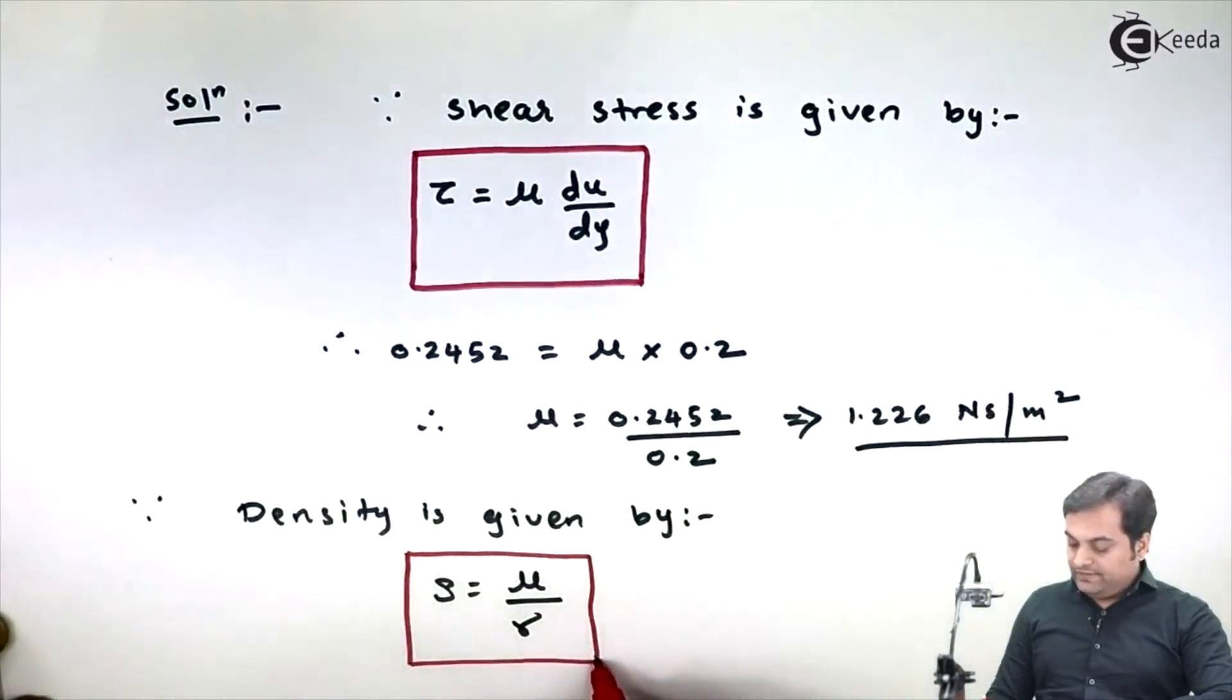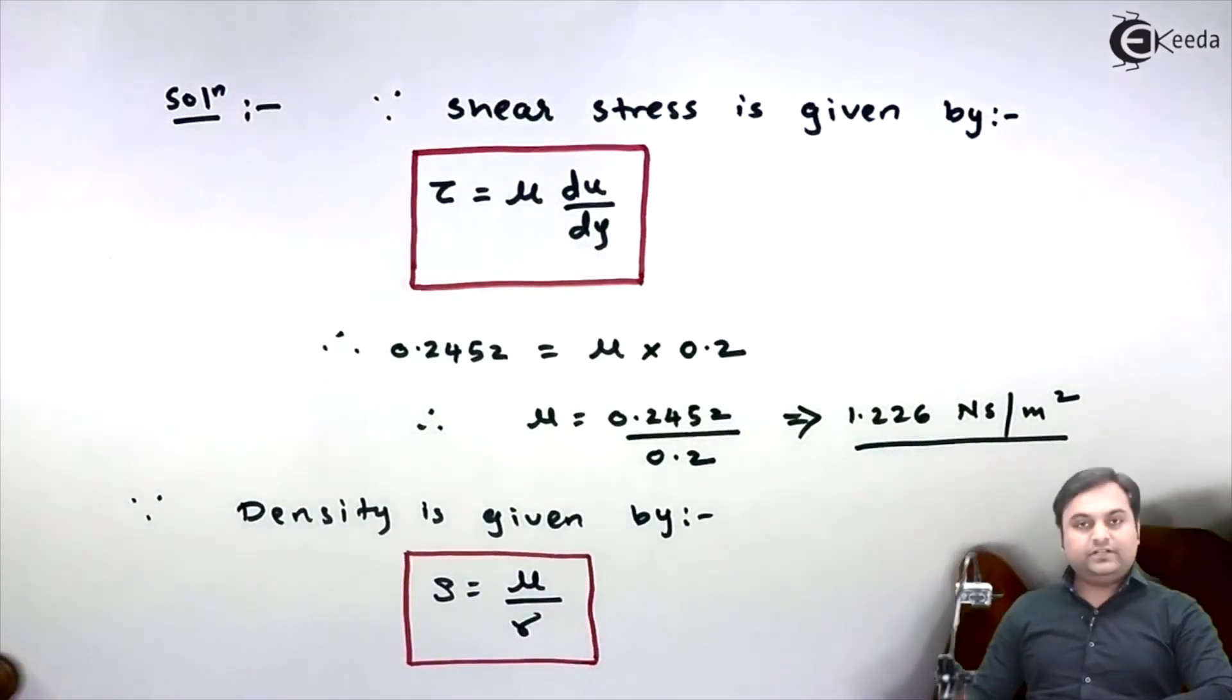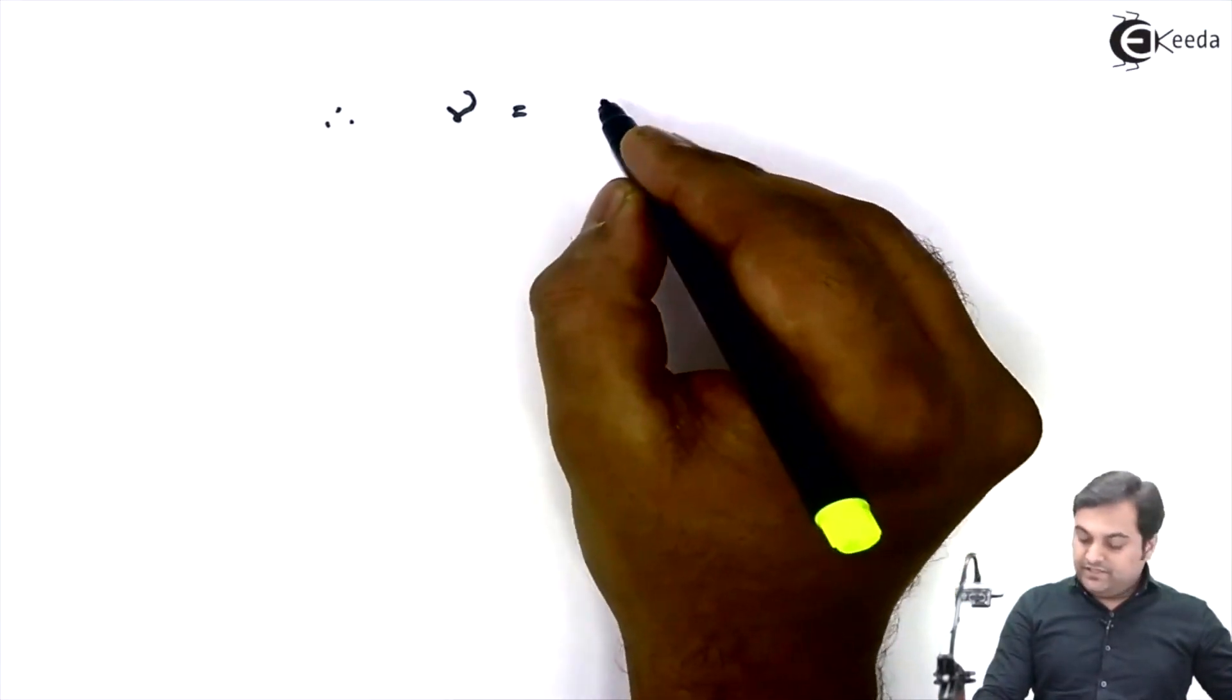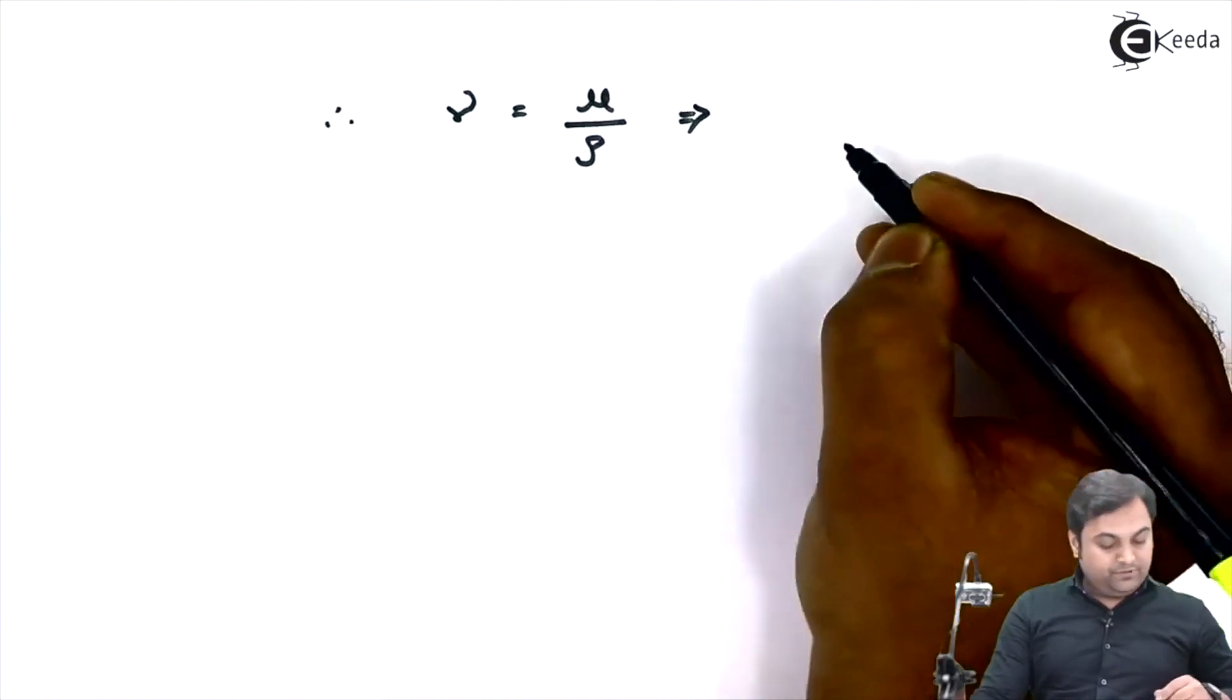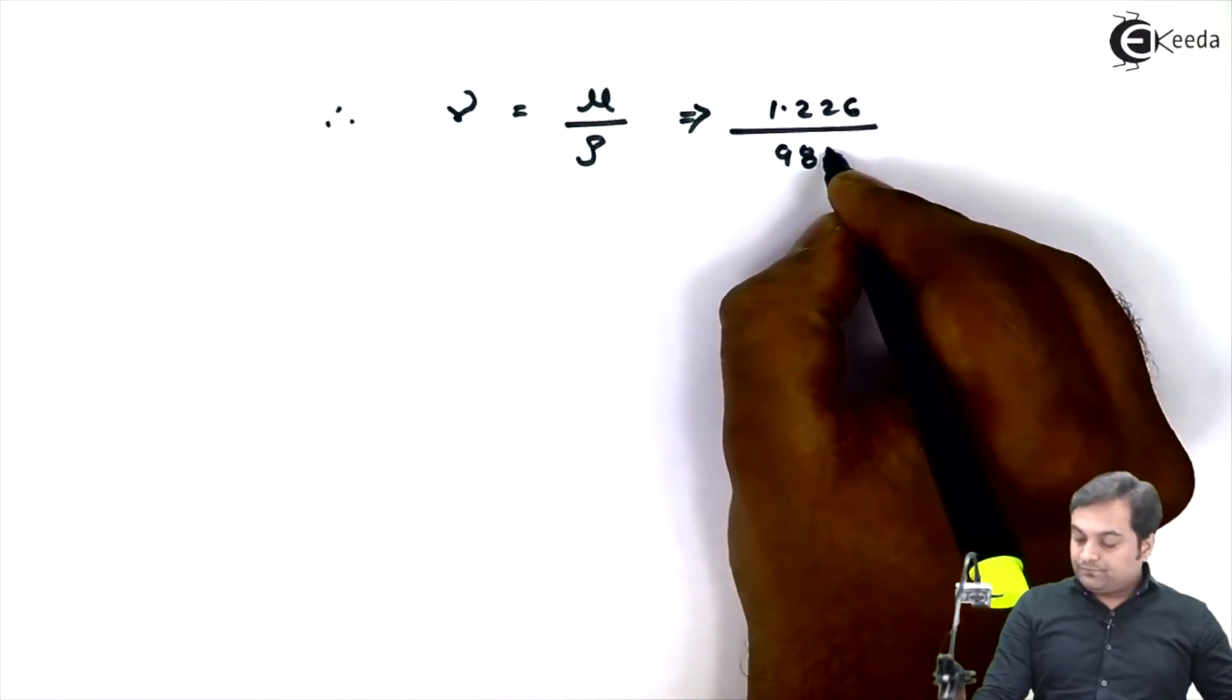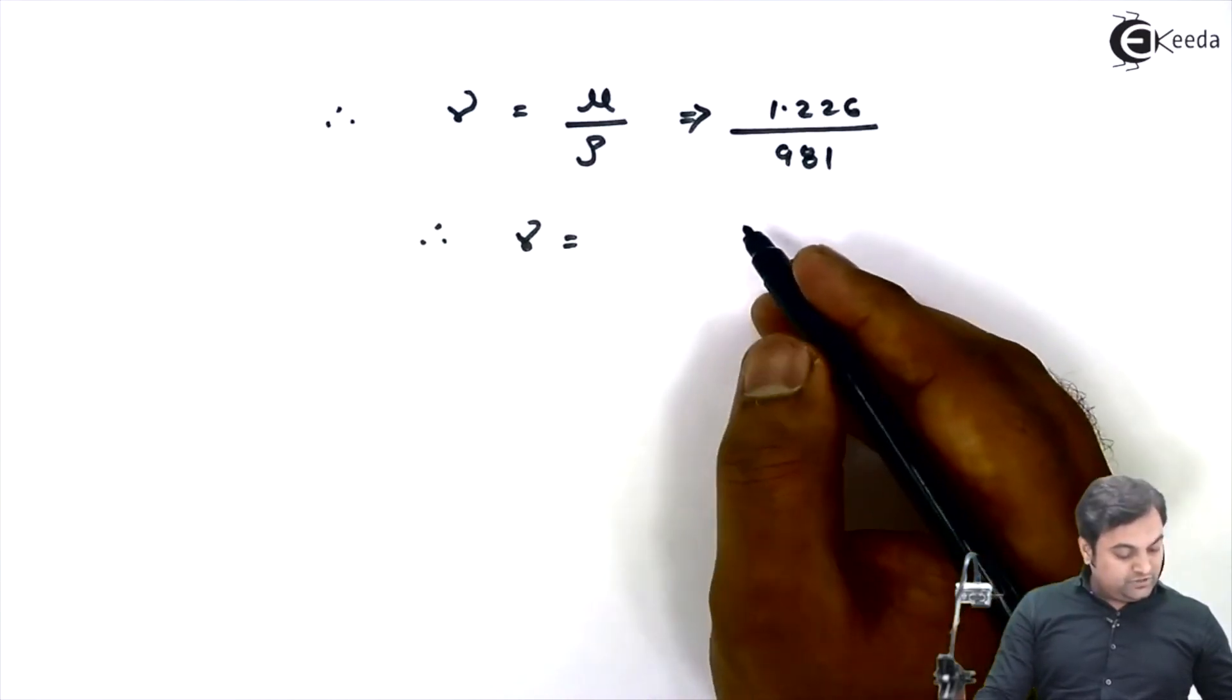Your dynamic viscosity we have calculated, density is given, so we can easily calculate kinematic viscosity. Therefore kinematic viscosity nu equals mu upon the density. Here I'm putting the values: mu is 1.226, density was given 981.